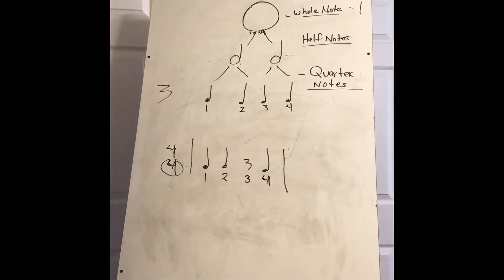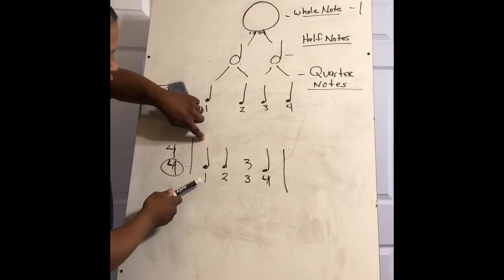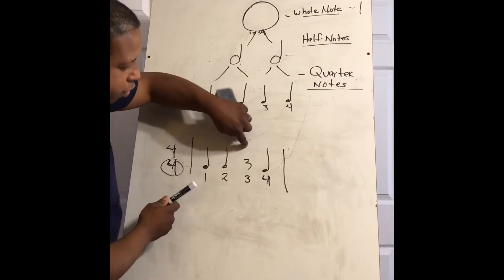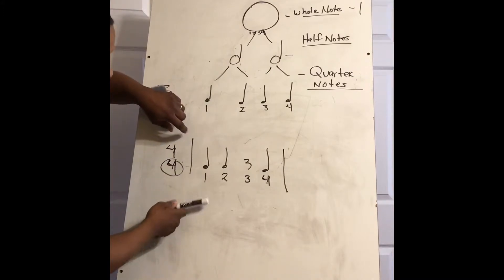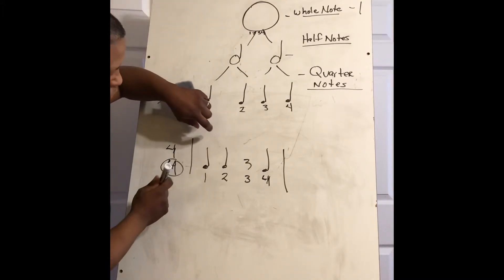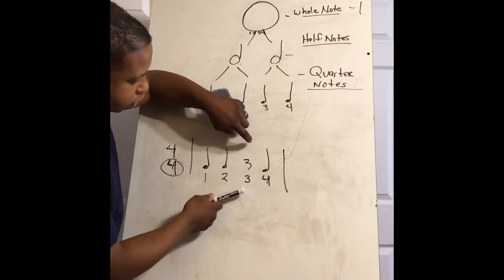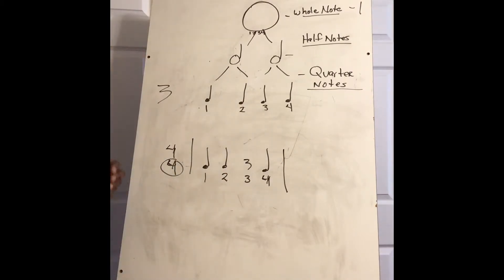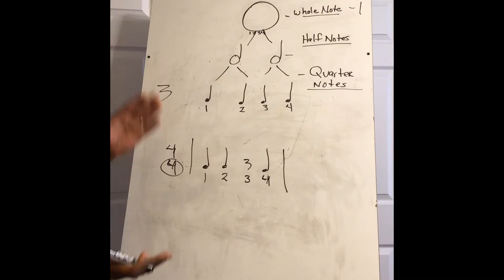If we're looking at it, if the tempo's right there, you have one, two, rest, four. Let me keep the tempo with this. So you have one, two, ready, and you have one, two, three, four. Clap it out. One, two, ready, and you have one, two, three, four.